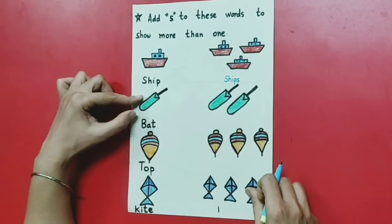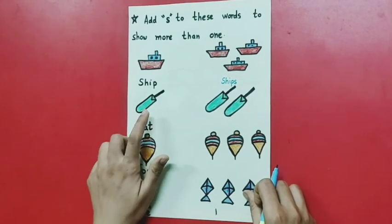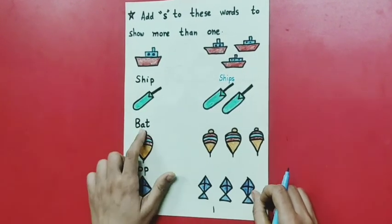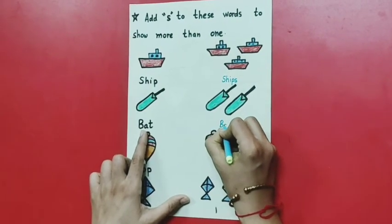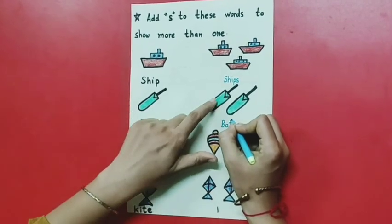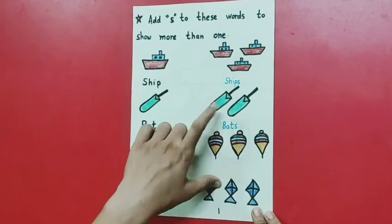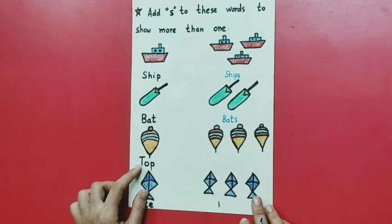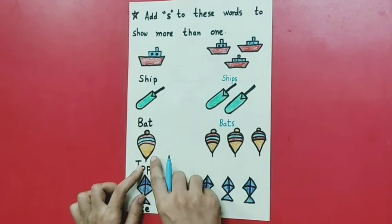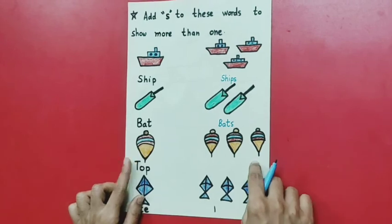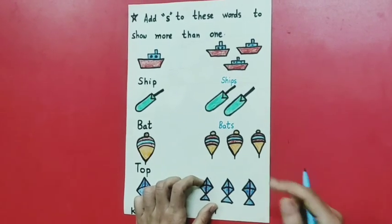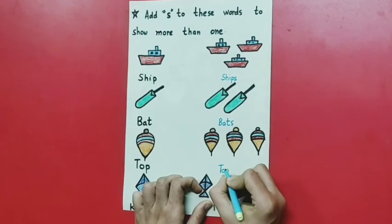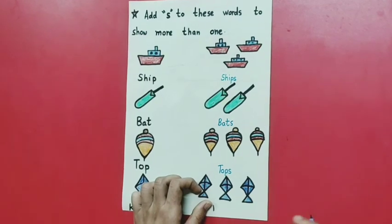Moving to next — it's a bat. How many bats are here on this side? Only one. But on the other side, how many bats are there? 1, 2. So the spelling of bat will change — first copy the same spelling, then add 'S'. Moving to next — this is a picture of a top, a toy. How many are here on this side? Only one. But on the other side: 1, 2, 3 — many. So we add 'S': T-O-P becomes T-O-P-S, tops.